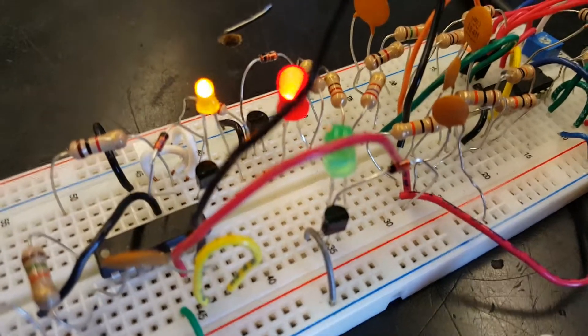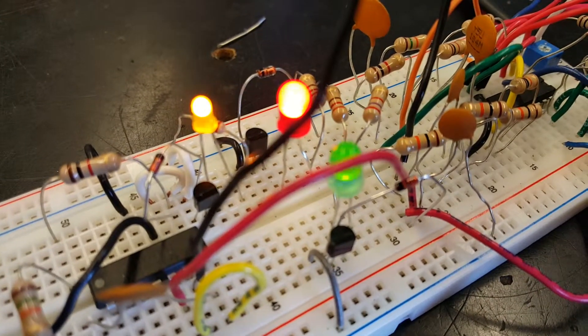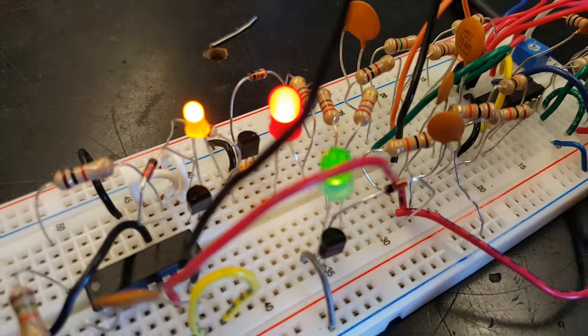The outputs run to the BJTs and then they allow current to go across the LEDs.